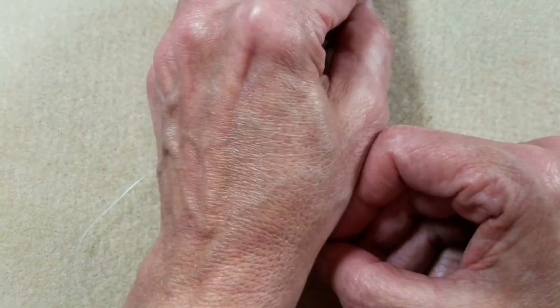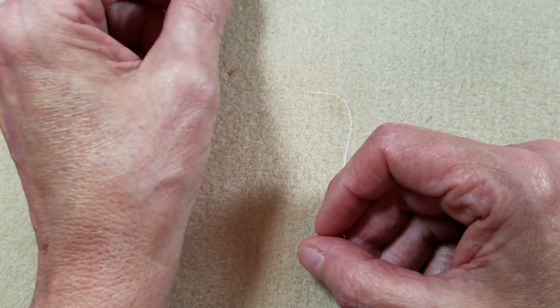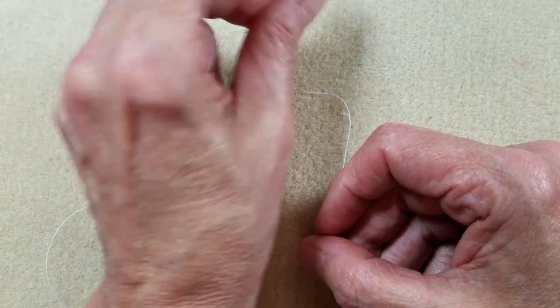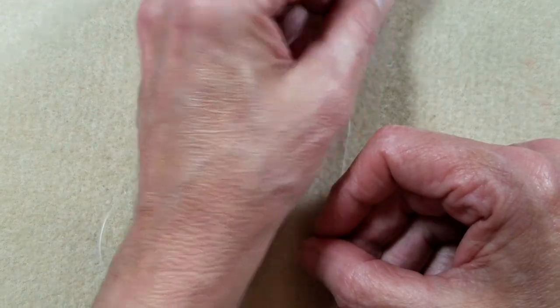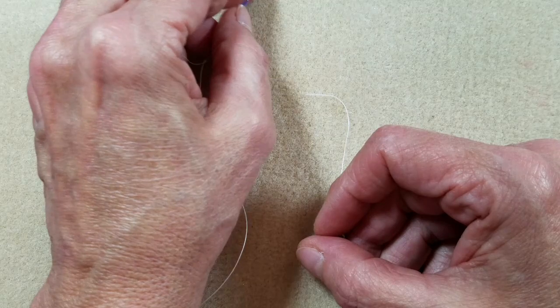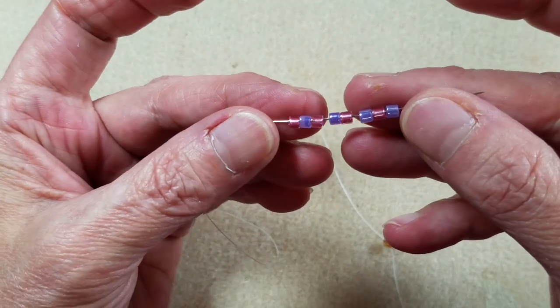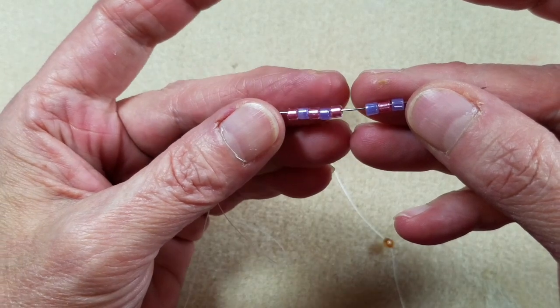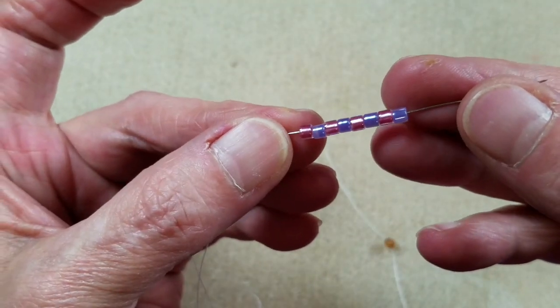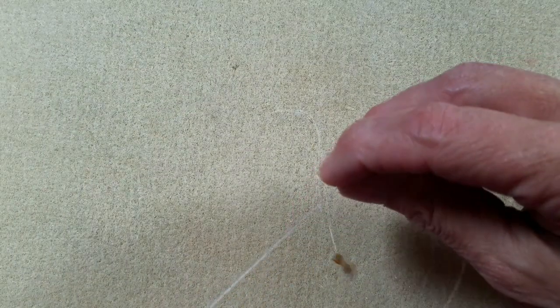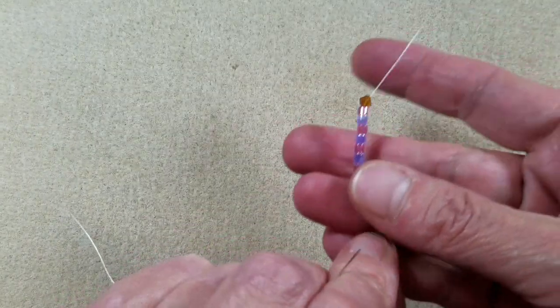Let's pick up eight beads. Because this is even count peyote we want to pick up an even number, so I'm going to alternate the colors four times. I picked up a pink, a purple, pink, purple, pink, purple, pink, purple, so that I have four pinks and four purples.